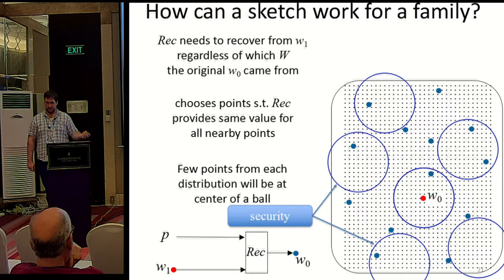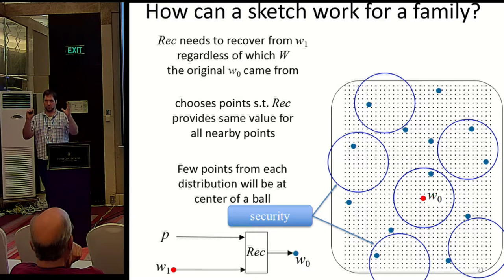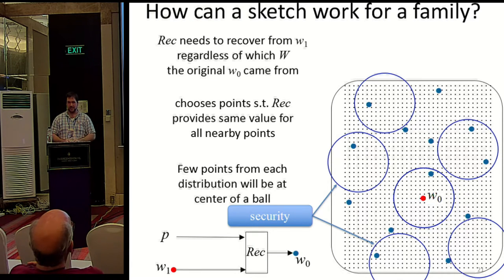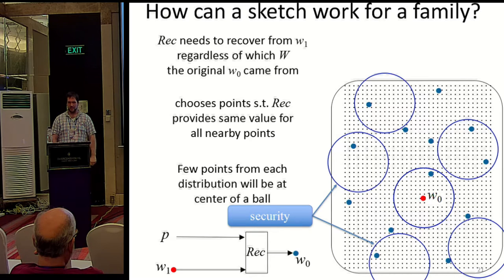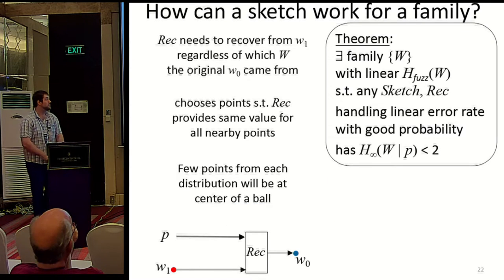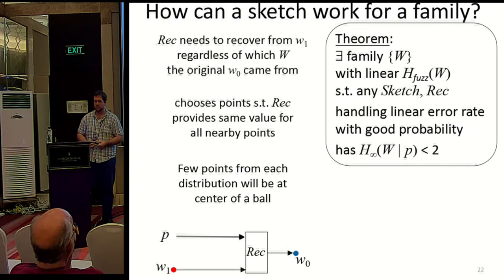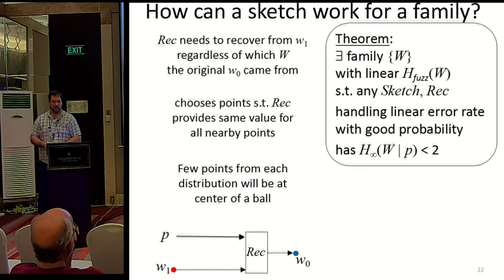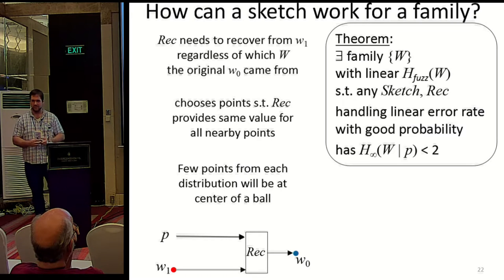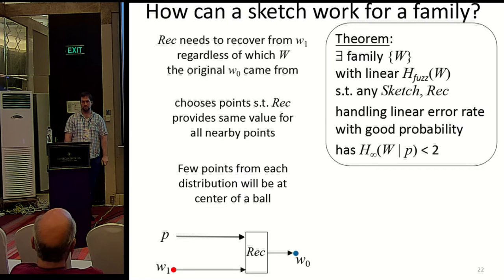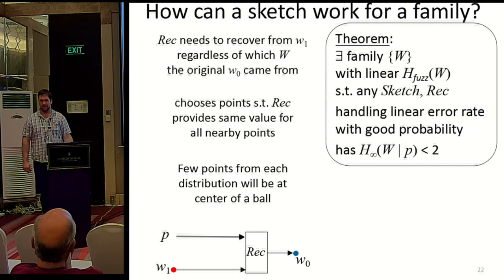As an adversary who knows the exact distribution, we can look at the intersection of the distribution with the points that lie at the center of these balls. This allows us to show there's a family of distributions with linear fuzzy min-entropy such that any secure sketch construction handling a linear error rate retains only two bits of entropy — and this is only requiring 50% correctness. This is a really bad impossibility result.